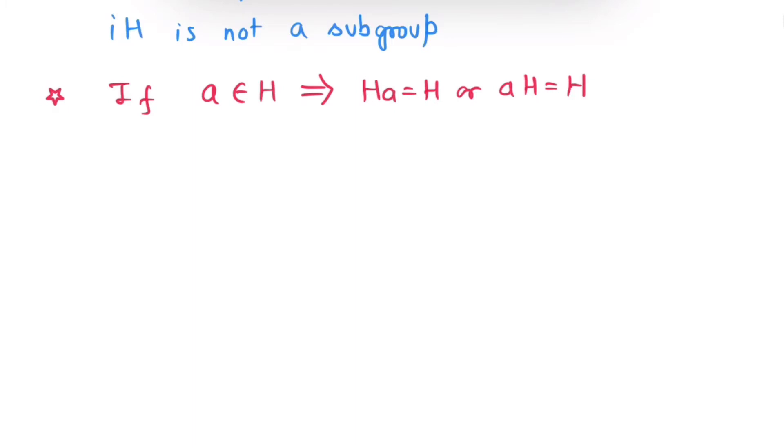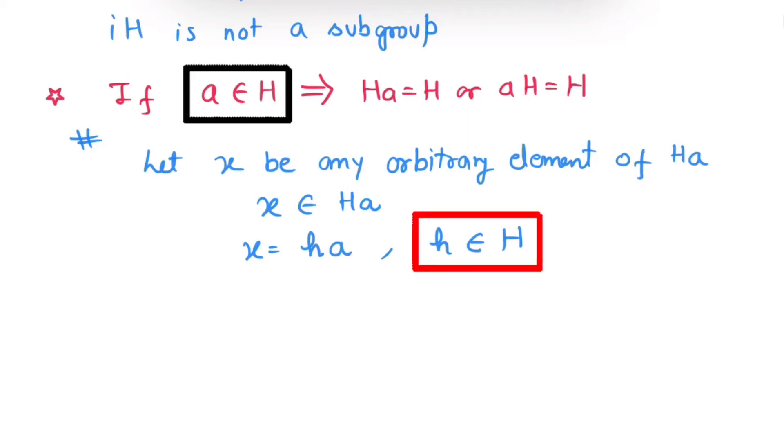So, let us prove. Now, take any arbitrary element X of HA. That is, X belongs to HA. Since X belongs to coset HA, we can write X equals to small h into A, where H is member of H. Now, it is given that A belongs to H and H is a member of H. So from closure property, we can say HA is also member of H. And HA is what? HA is nothing but X. So X belongs to H.